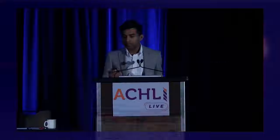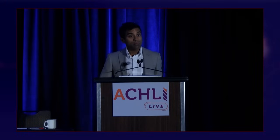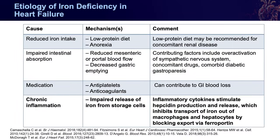What are the reasons for reduced iron, especially absolute iron deficiency? Low iron intake, a low protein diet, or other forms of low GI intake would lead to iron deficiency. Furthermore, there could be a primary absorption issue, which might be common in patients with cardiorenal metabolic disorders.